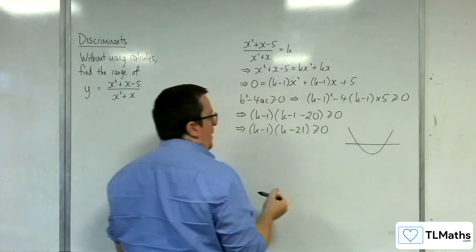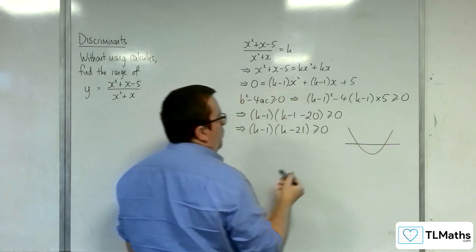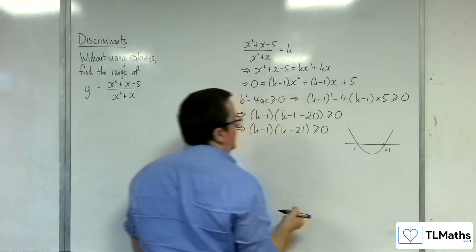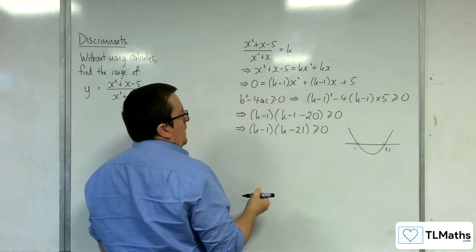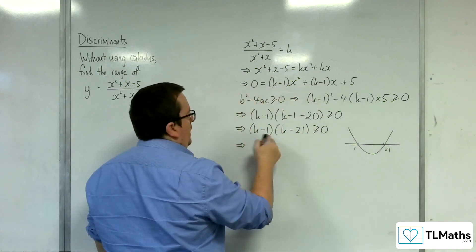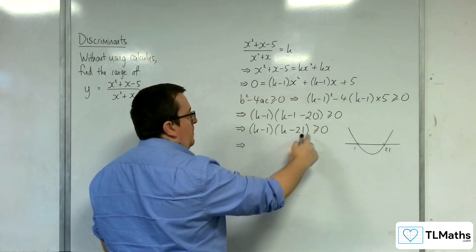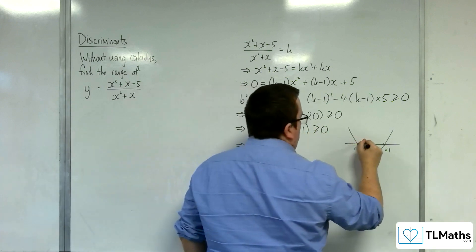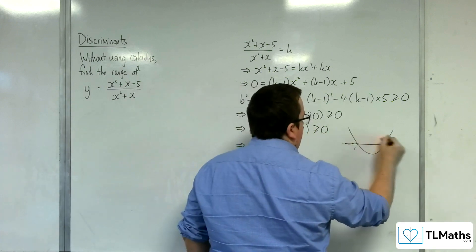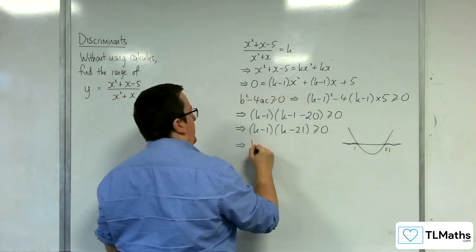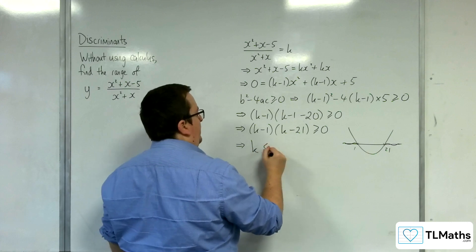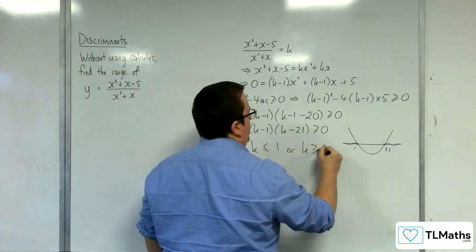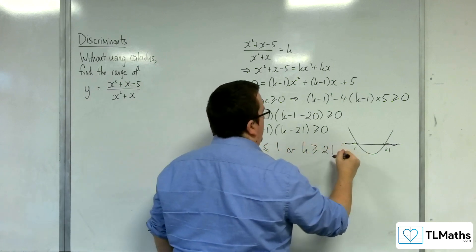Do a quick little parabola — so the roots are 1 and 21. That means, where is the parabola above or equal to 0? Well, that would be the outer regions. So, when k is less than or equal to 1, or k is greater than or equal to 21.